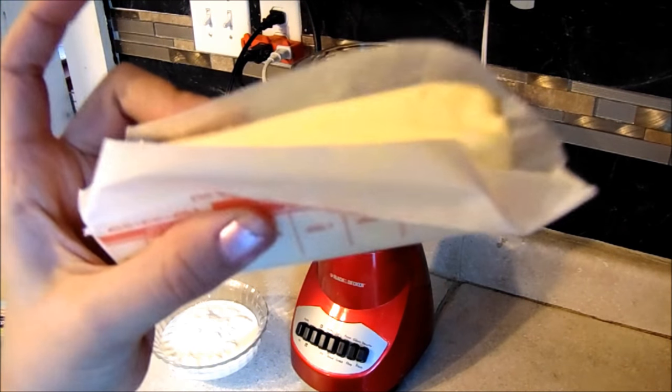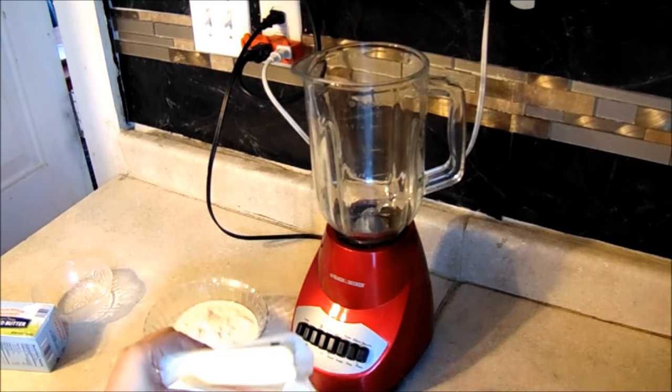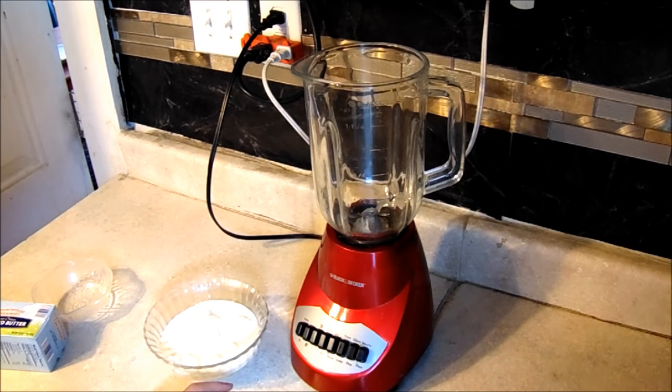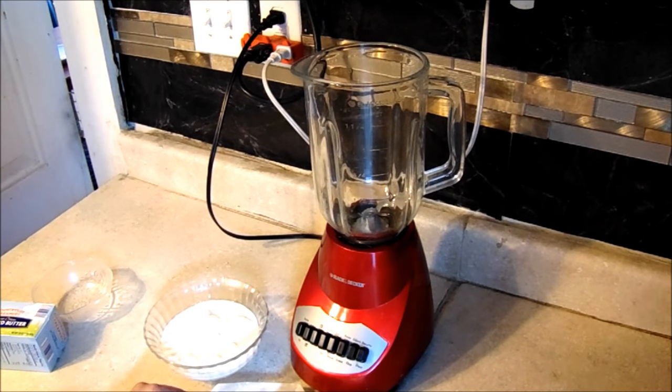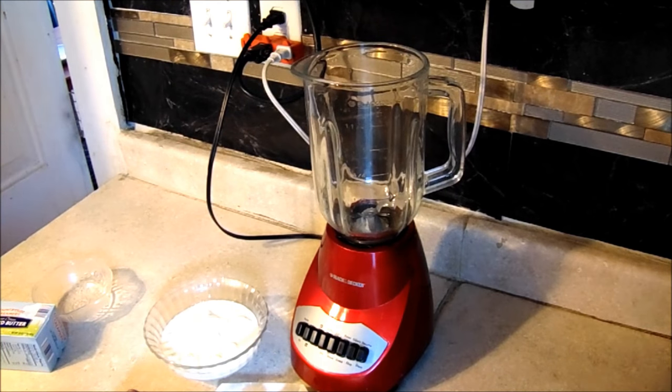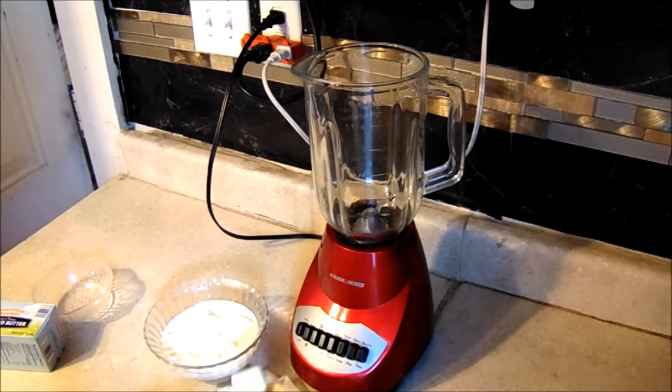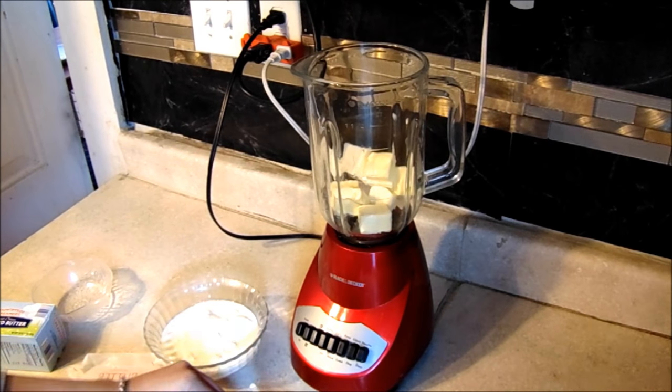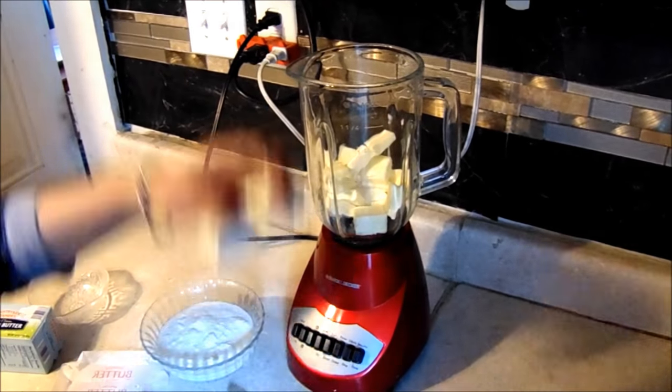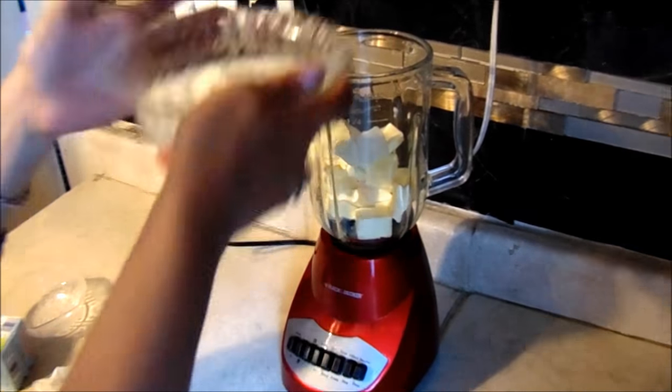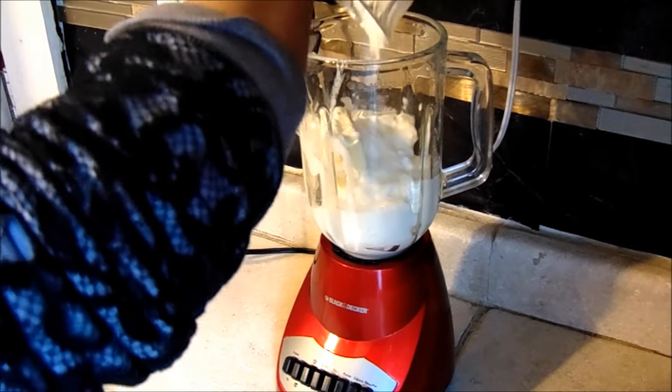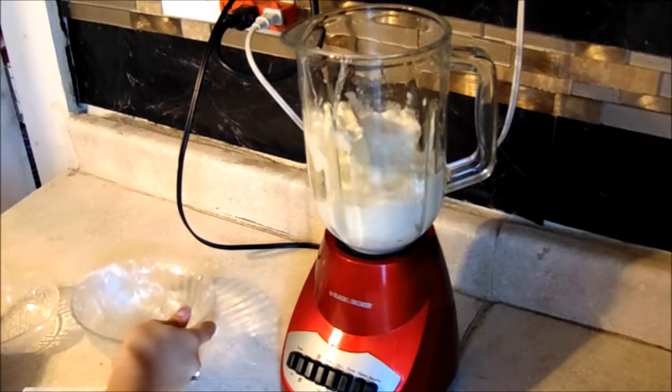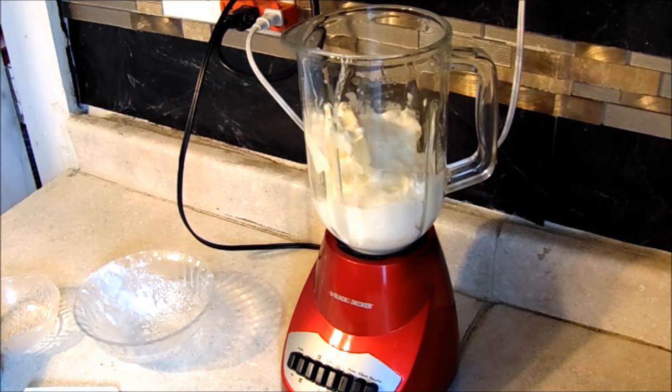I'm going to cut my butter into tiny little pieces. They don't have to be too tiny. Cut your butter and put it in your blender. Then add your yogurt and blend everything together.